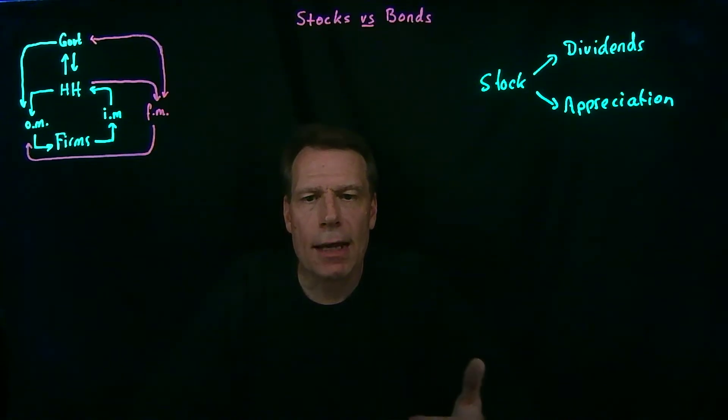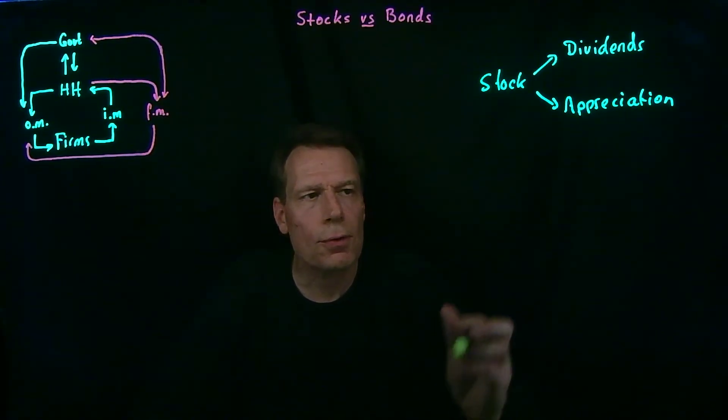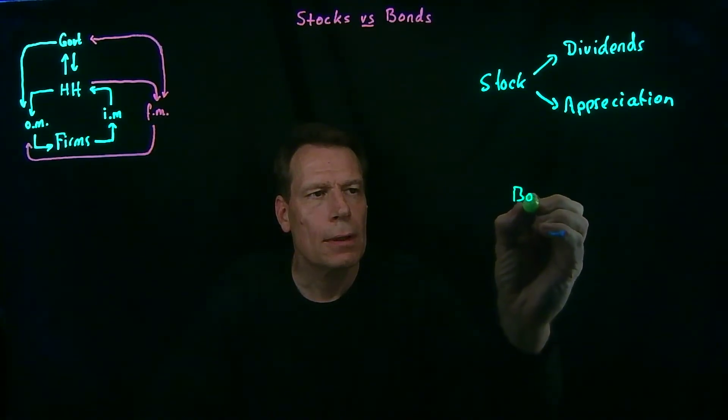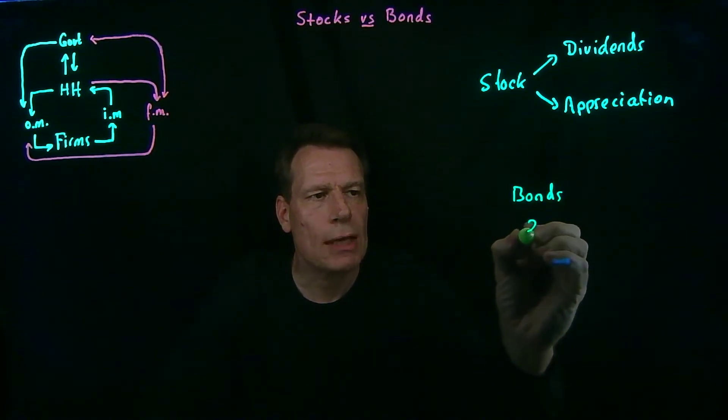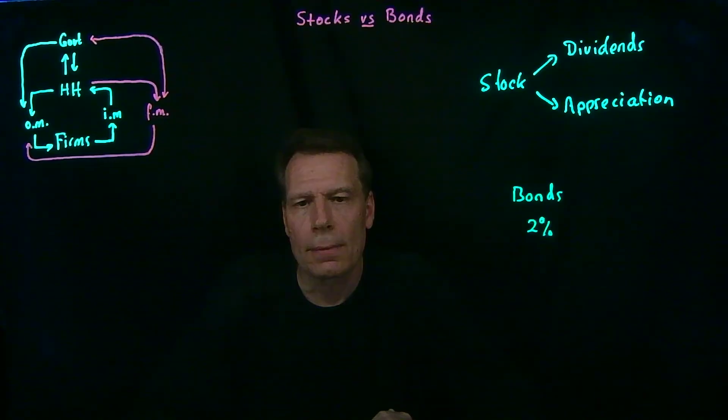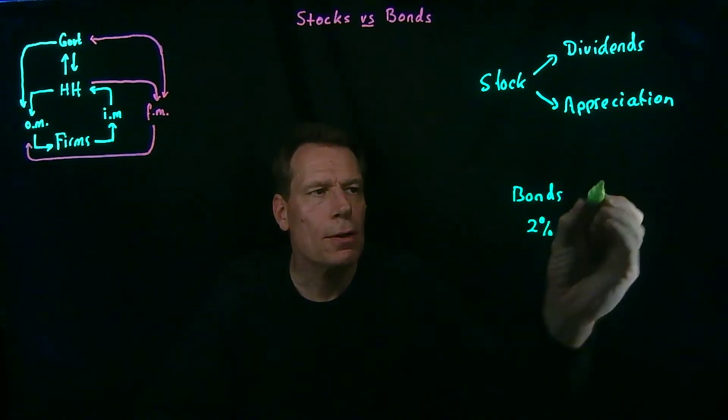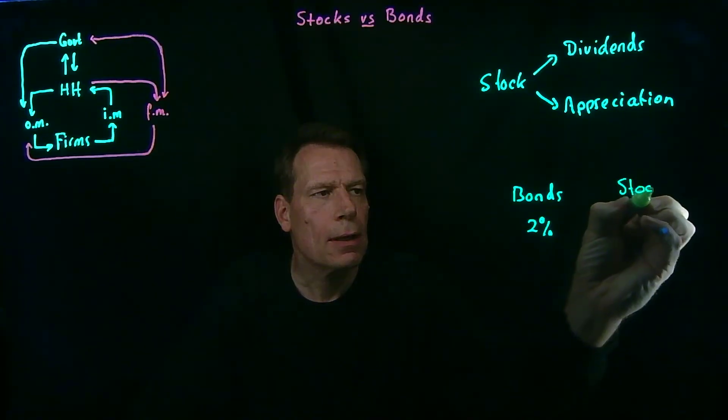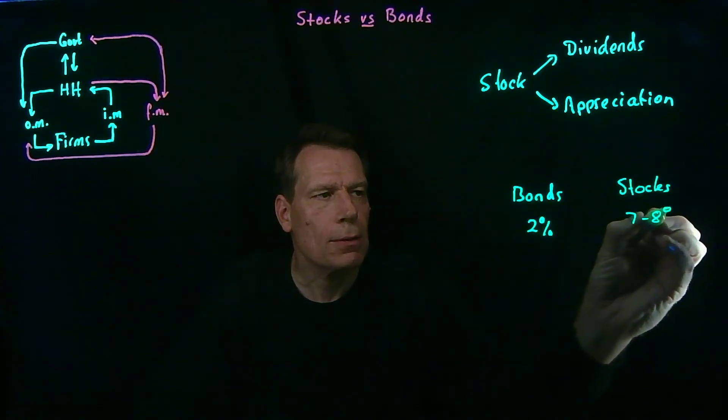Now, historically, over the last hundred years or so, the real inflation-adjusted rate of return for bonds has been about 2% a year. That same real inflation-adjusted rate of return for stocks has been more like 7% to 8% per year.